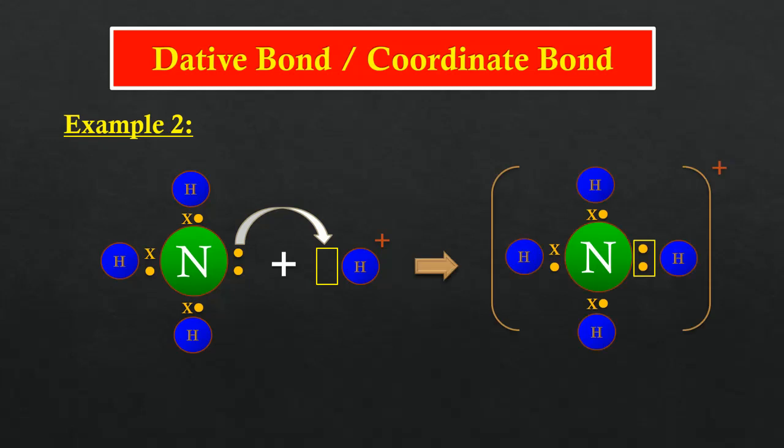In the ammonium ion, nitrogen atom and all the hydrogen atoms have achieved stable octet and duplet electron arrangement respectively. Ammonia is the donor and the hydrogen ion is the acceptor.